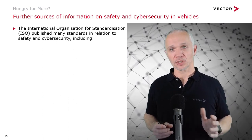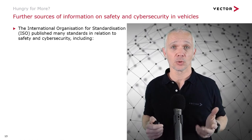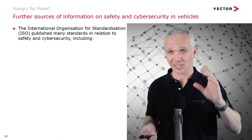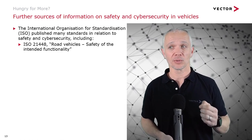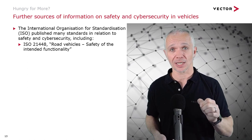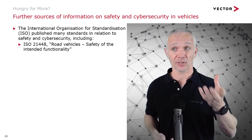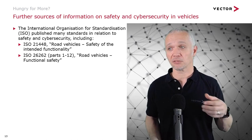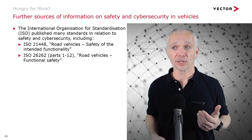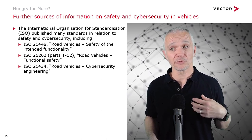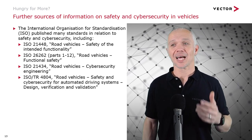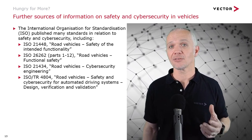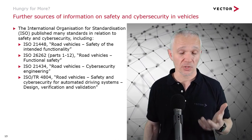There is a lot more information on these topics. ISO, the International Organization for Standardization, has published many standards in relation to safety and cyber security. A short selection: ISO 21448 covers Road Vehicles Safety of the Intended Functionality; ISO 26262, which comes in 12 parts, covers functional safety for Road Vehicles; ISO 21434 covers cyber security engineering for Road Vehicles; and ISO TR 4804 covers safety and cyber security for automated driving systems during design, verification, and validation. These are probably the four most well-known standards, but there are others from various standardization bodies as well.